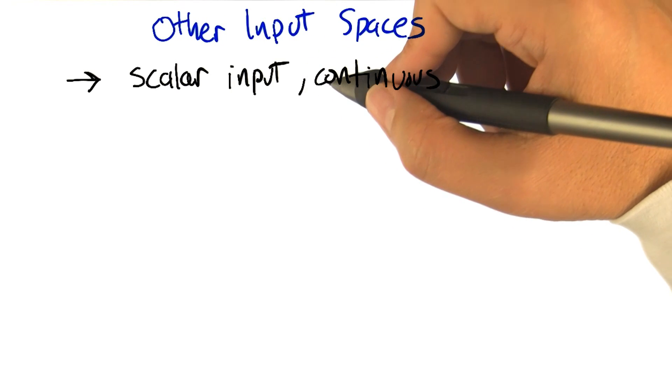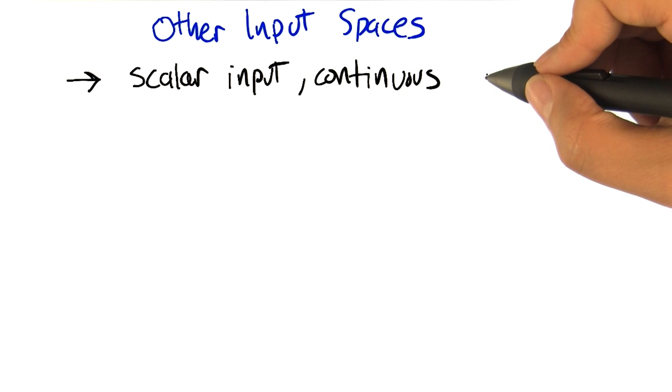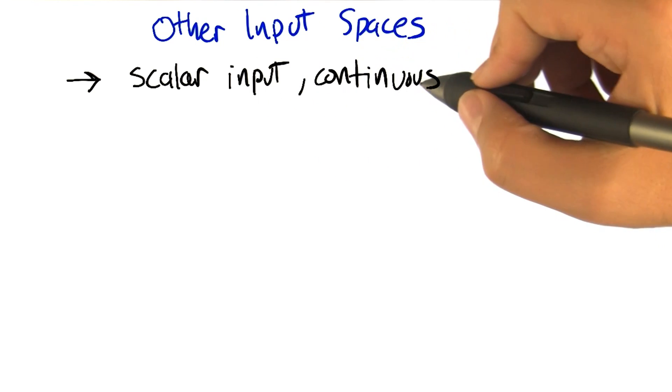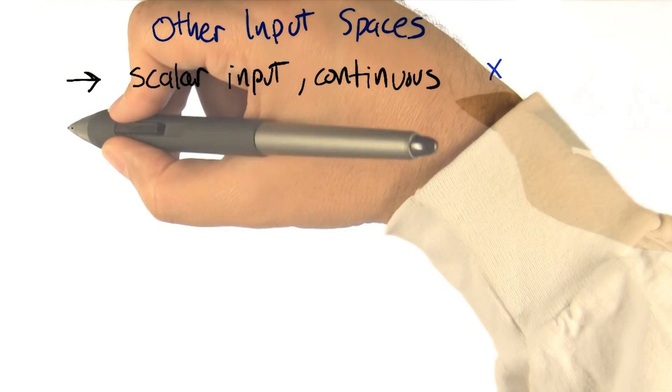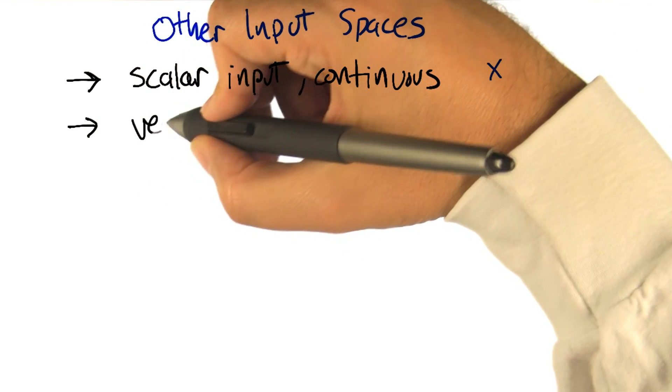All right, up to this point I've been talking about regression in the context of a scalar input and continuous output. Sorry, scalar input and continuous input. But the truth of the matter is we could actually have vector inputs as well.